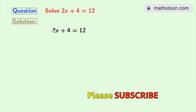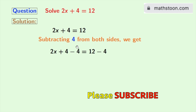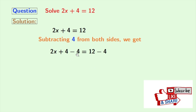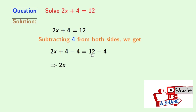Our given equation is this. Now to get the value of x, we will subtract 4 from both sides. Doing so, we get 2x plus 4 minus 4 is equal to 12 minus 4. In the left hand side, we have plus 4 and minus 4 which is 0, so we are left with 2x. And in the right hand side, 12 minus 4 is 8.